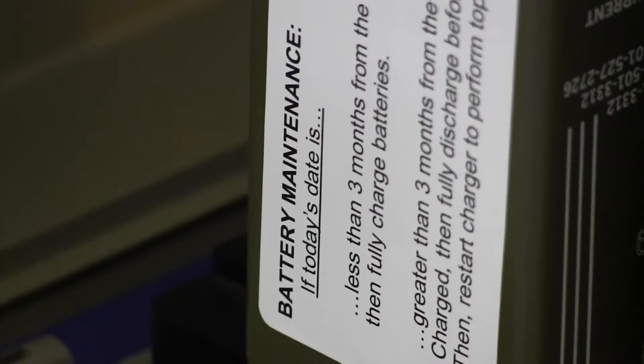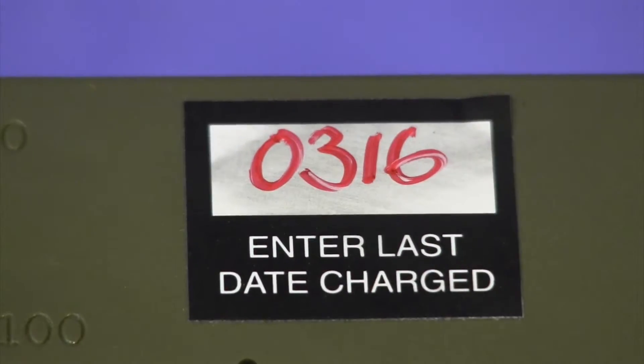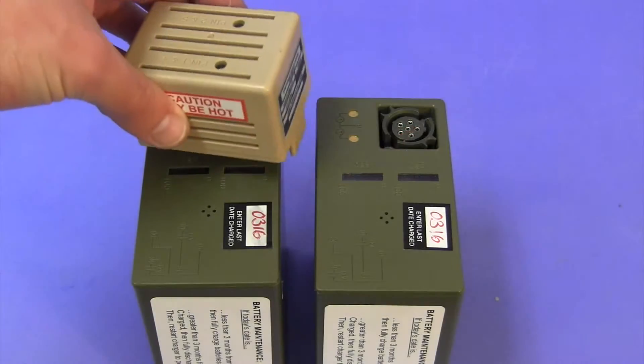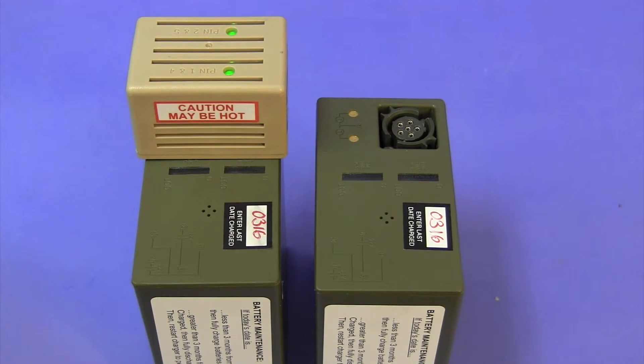If during the initial last date charge check, the date recorded is greater than three months from today's date, then fully discharge the batteries before charging. To discharge the batteries, install a self-discharge cap onto each battery.